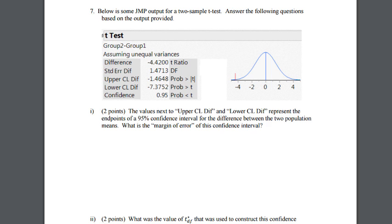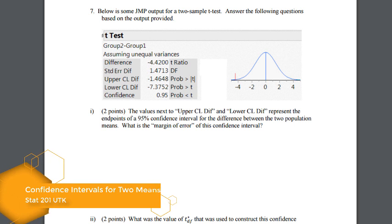For question number seven, you're given the output of two independent means. Specifically, we want to know if you can answer questions about the confidence interval.